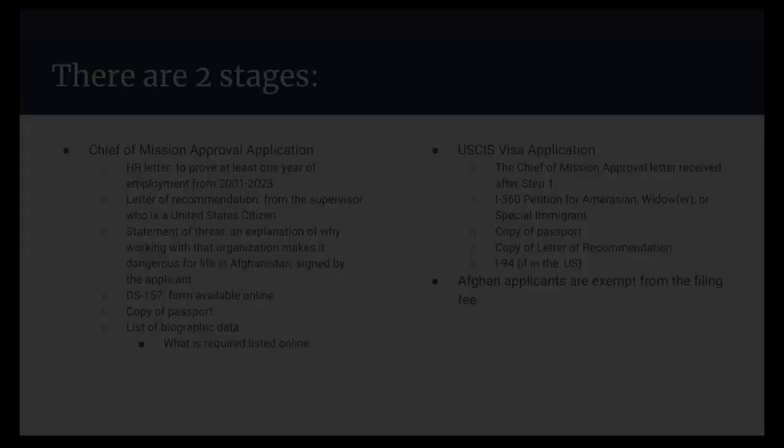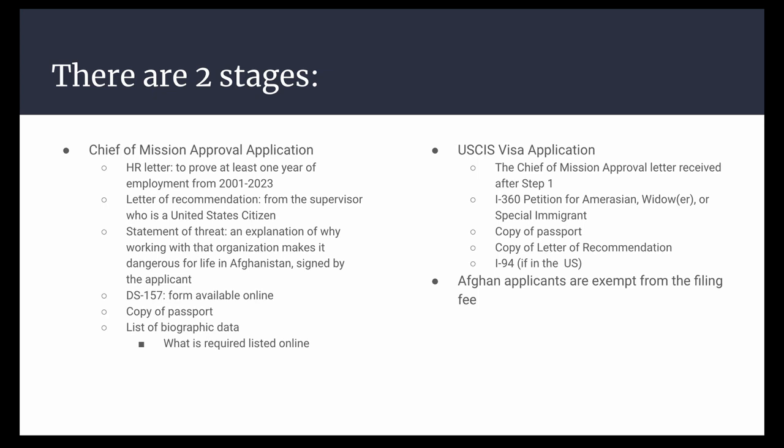There are two stages when applying for your SIV. The first is the submission to the NVC, or the National Visa Center, for your Chief of Mission approval. This application includes an HR letter, a letter of recommendation, a statement of threat, Form DS-157, a copy of your passport or relevant identification, and a list of biographic data.